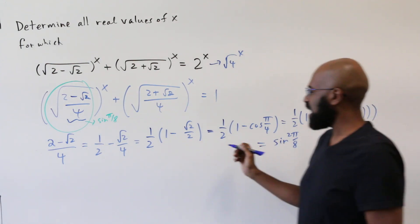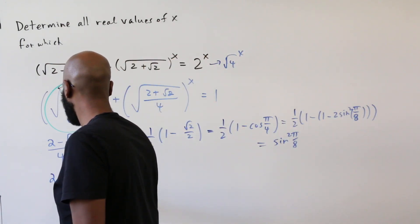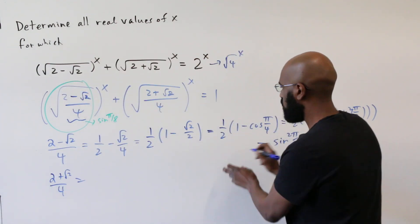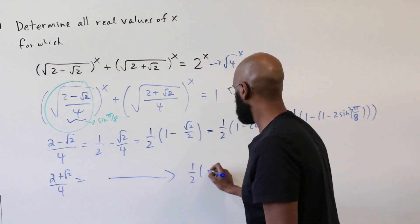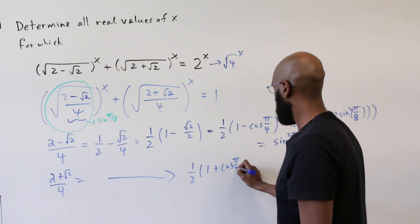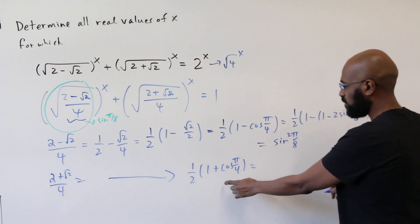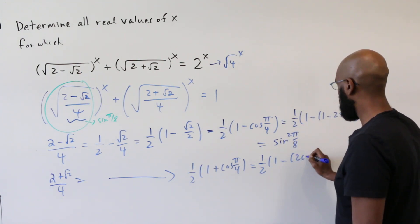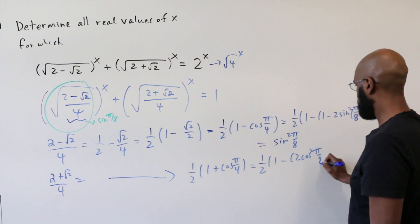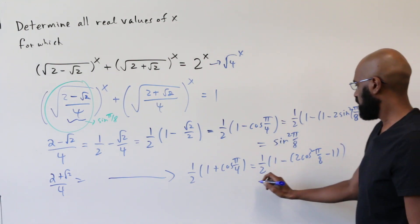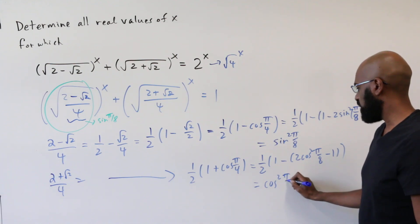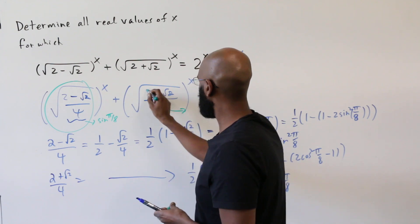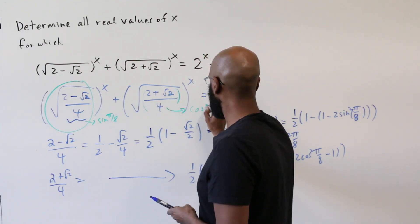By a similar calculation, (2 plus root 2) over 4 equals one half times (1 plus cosine(π/4)). Using the double angle formula for cosine, this gives us 2cos²(π/8) minus 1... which works out to cos²(π/8). So the argument in the second radical is cos(π/8).